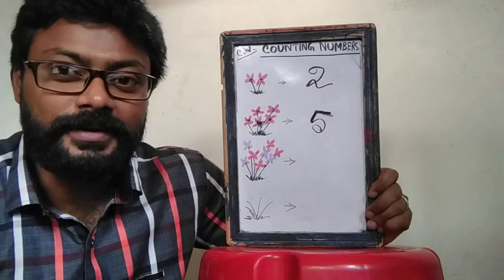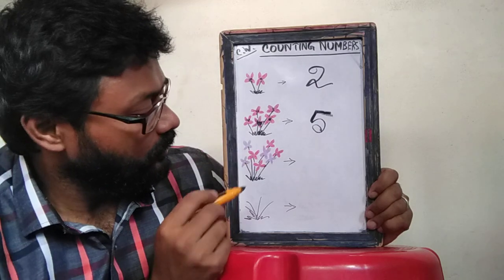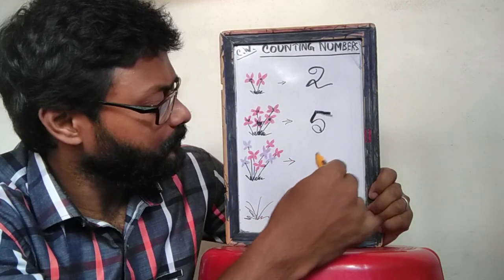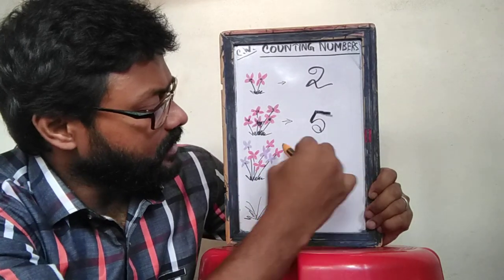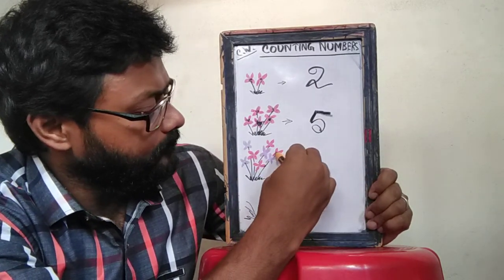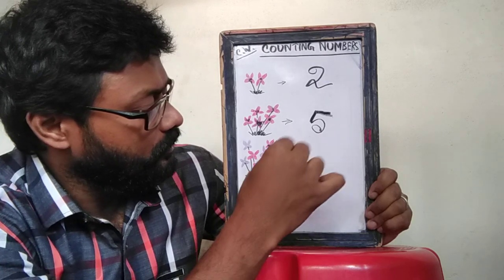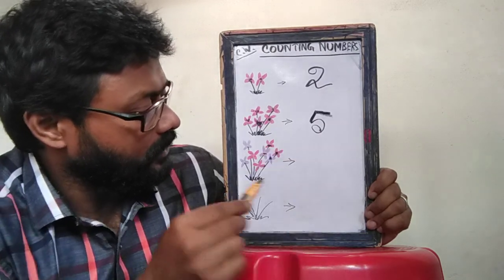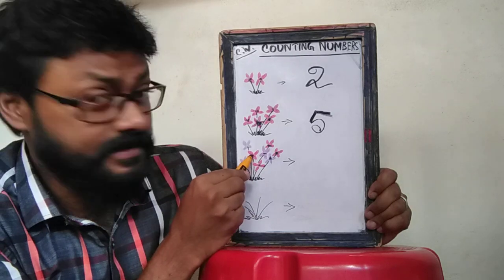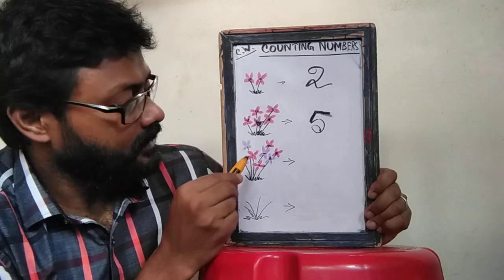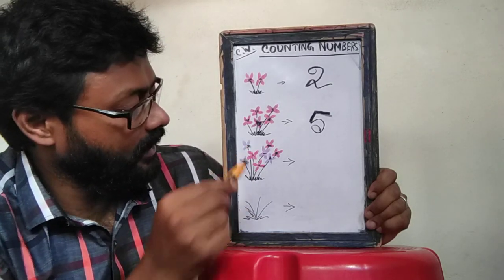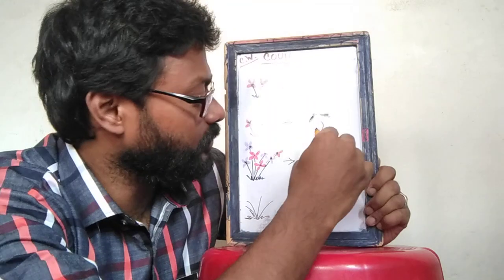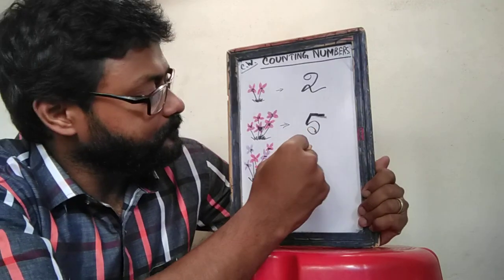The next one. There are a lot of flowers. We have to count. We can count it from the right side. So let's count: 1, 2, 3, 4, 5, 6, 7, 8. There are 8 flowers. So we will write 8 over here.